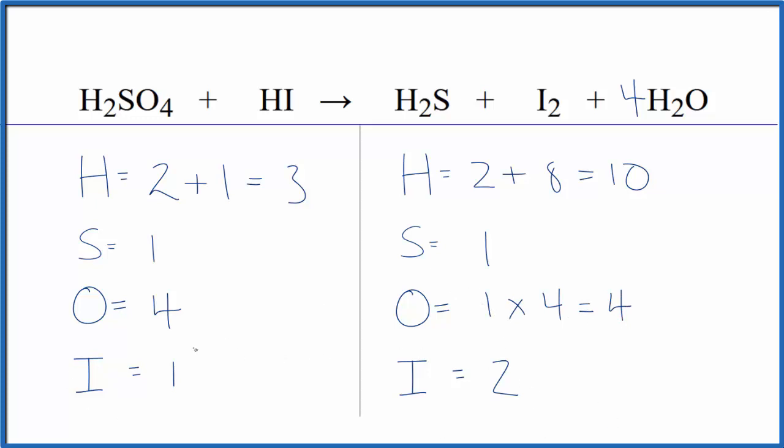Let's try to fix the iodines here. Let's put a two in front of the HI. And the reason this is so hard to balance is we have hydrogens all over the place here. So we change one thing, we have to add them up again. It gets really complicated quick, but we'll try it.